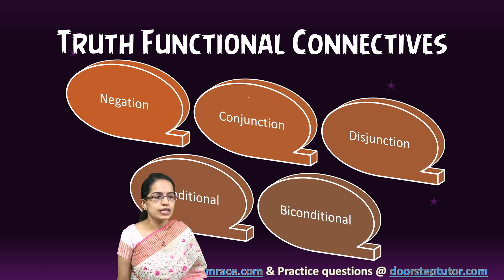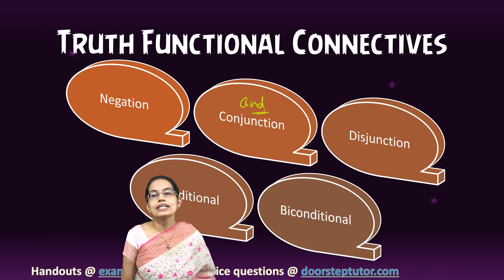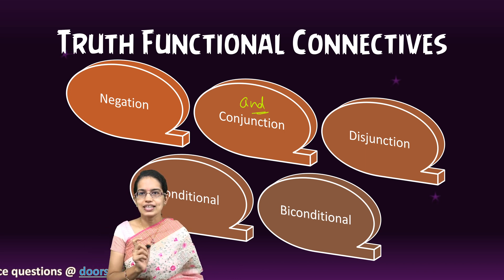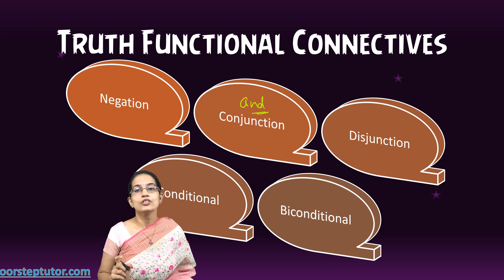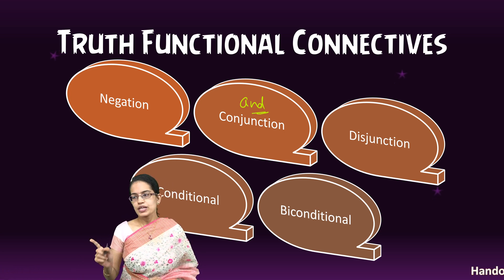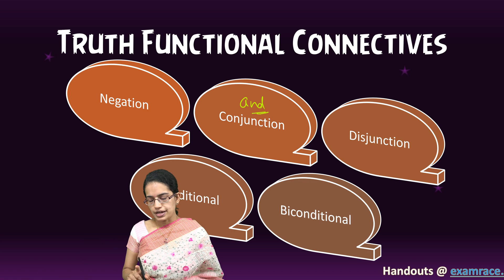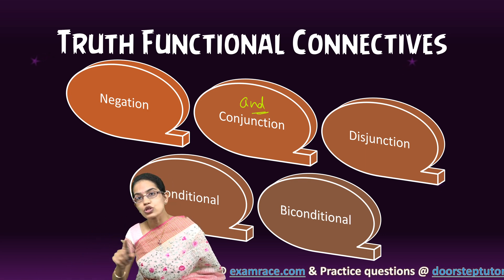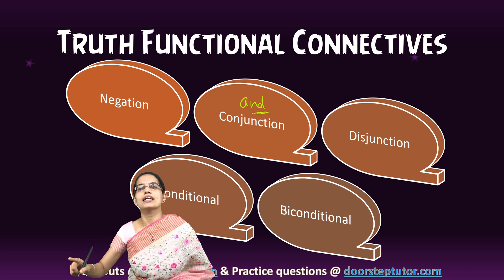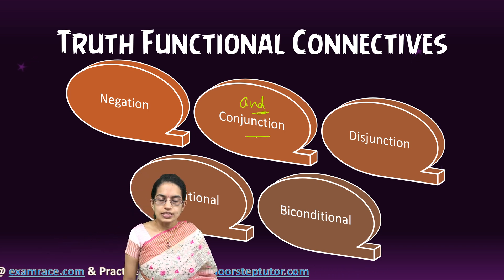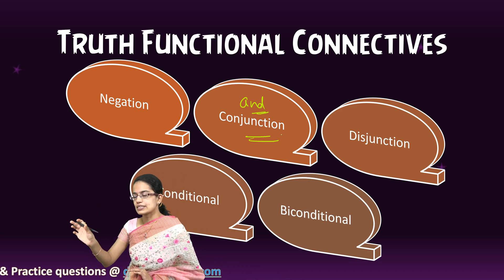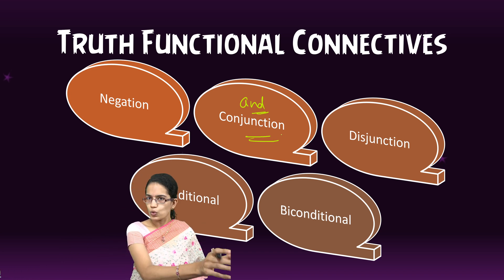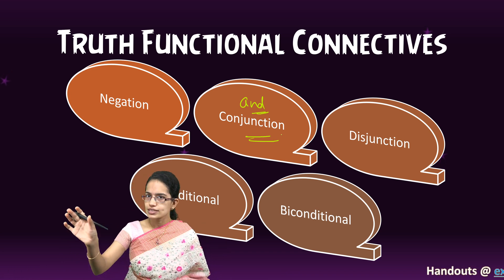When I am connecting two statements with 'and,' it is called conjunction, and a good example would be 'it is rainy and cloudy.' Both the propositions must be true — 'it is rainy' is true and 'it is cloudy' is true — for 'it is rainy and cloudy' to be true. The independent sections are known as conjuncts: 'it is rainy' is one conjunct, 'it is cloudy' is another conjunct.